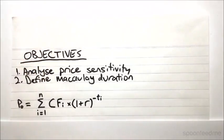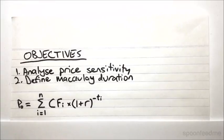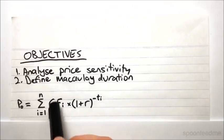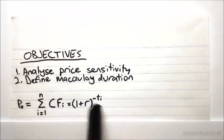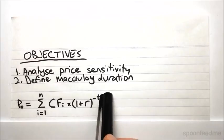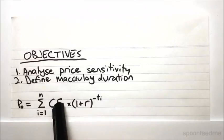So first up, I've just got a simple formula here, which is for the price of basically any general security that promises a set of future cash flows. So it's a bit more general than just for a bond. It's very simple. It's just the present value of the future cash flows. So you've got each cash flow i discounted by ti, which is the time at which you receive that cash flow i.